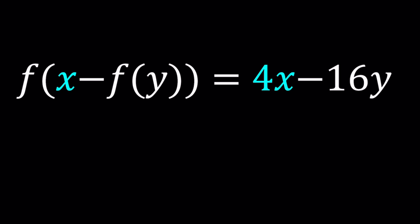We have f(x - f(y)) = 4x - 16y. And we're going to be solving for f(x). In other words, we're going to try to find an expression for f(x) in terms of x.